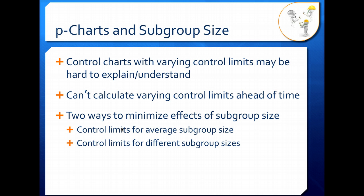There's two ways to minimize the effects of your subgroup size. One way is to use control limits for your average subgroup size. And the second way is to post several different control limits for different subgroup sizes on your chart. Let's take a look at each one of those.